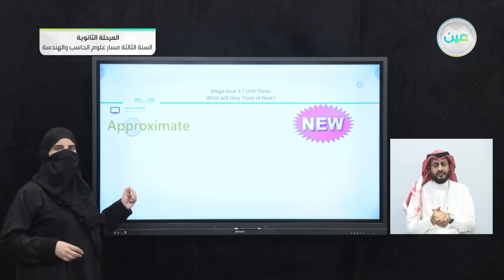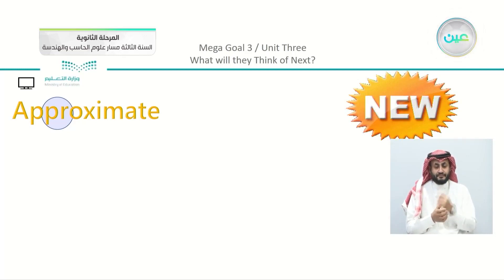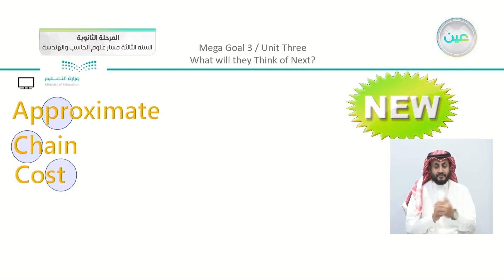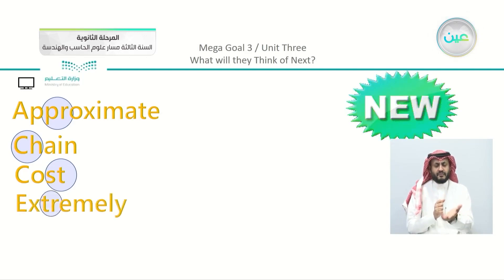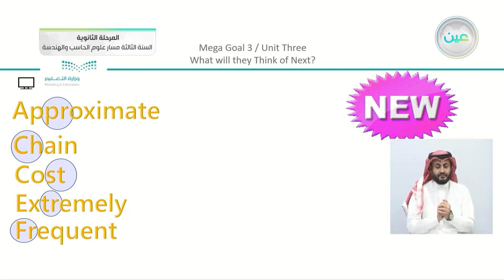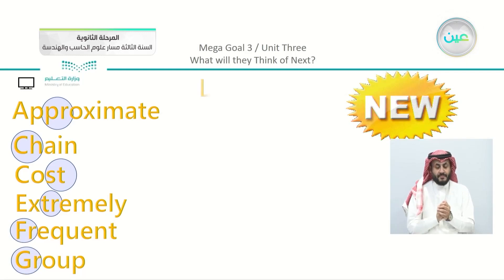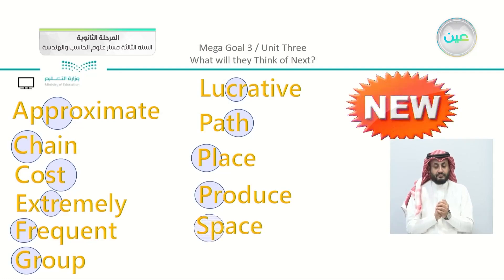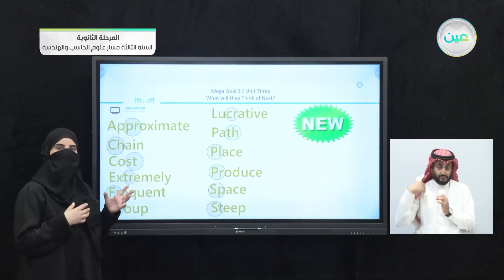We are going to see other words that have consonant clusters. We have the word 'approximate,' 'chain,' 'cost,' 'extremely,' 'frequent,' 'together,' 'group,' 'lucrative,' 'path,' 'place,' 'produce,' 'space,' and 'steep.' We pronounce these words together, knowing that the clusters appear in all of them. But there is something else — these words are actually going to appear in our second part of the lesson, which is the vocabulary building.